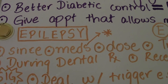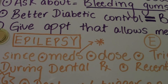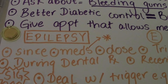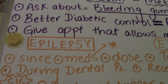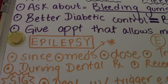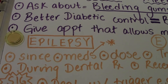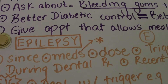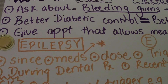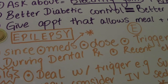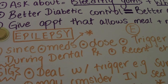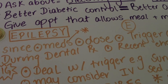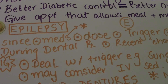Ask when they last had an epileptic attack and whether they've had one during any dental treatment. We need to make sure we have emergency drug equipment ready in case they do have an attack. We can treat all epileptic patients — that's not a problem — we just need to be prepared in case they have a seizure.